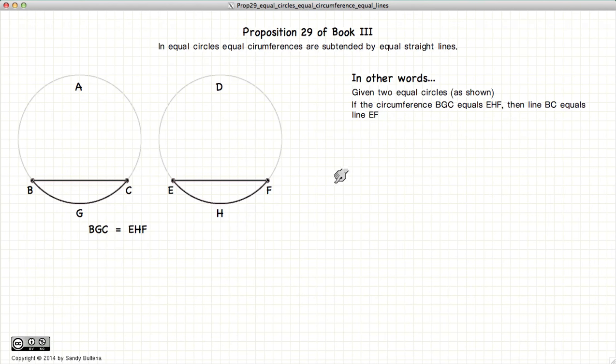This states that if we have two equal circles, and if we have part of the circumference BGC equal to the part of the circumference of the other circle EHF, then the line BC will equal the line EF.